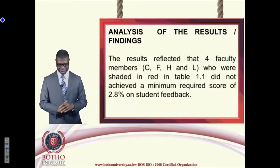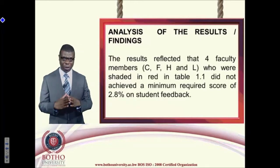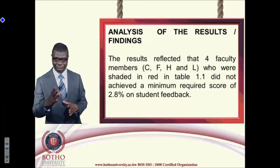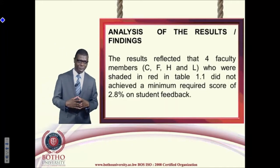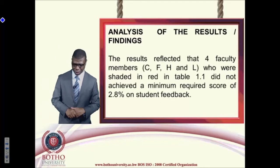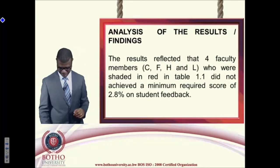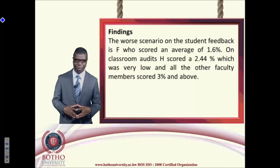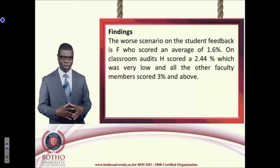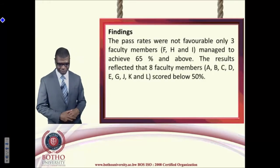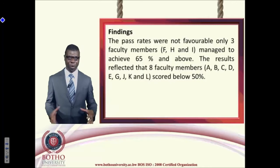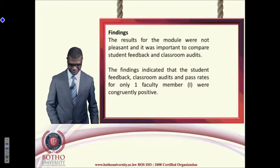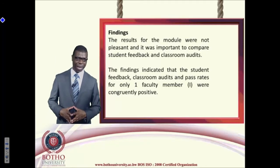The results reflected that four faculty members — C, F, H, and L — shaded in red in the table, achieved a low score mark of 2.8 on student feedback, below the benchmark of 2.9 used at the university. Faculty member F scored as low as 1.6 on student feedback. The pass rates were also not favorable for three faculty members, as they did not achieve a score of 50 percent.